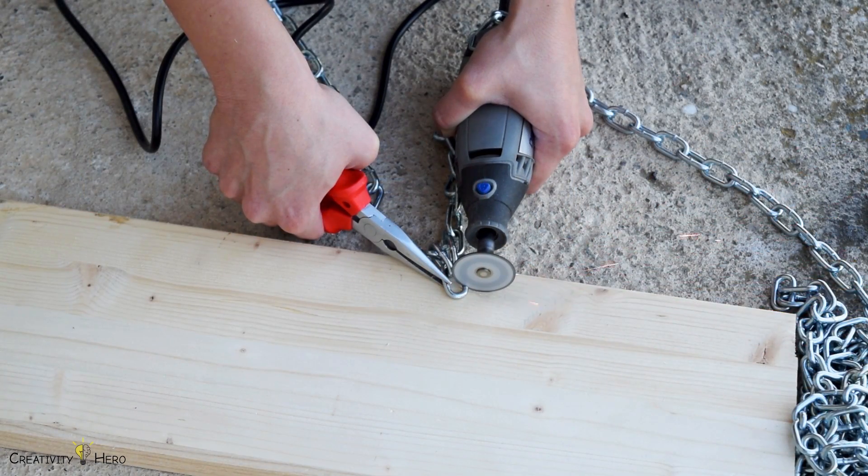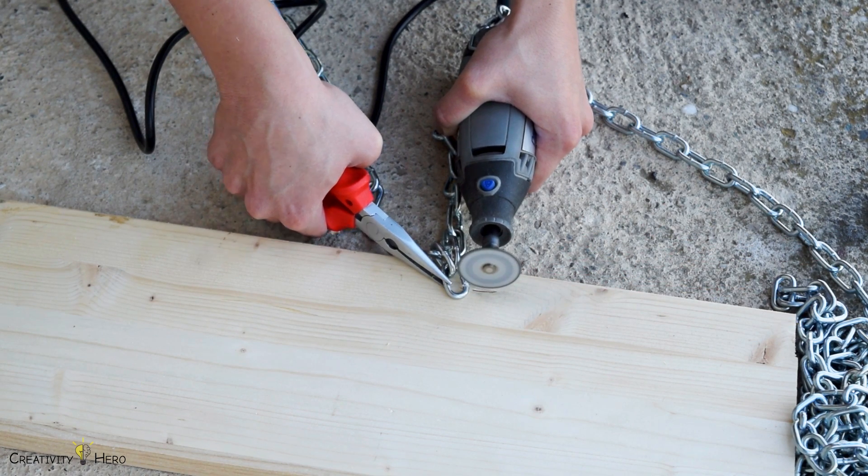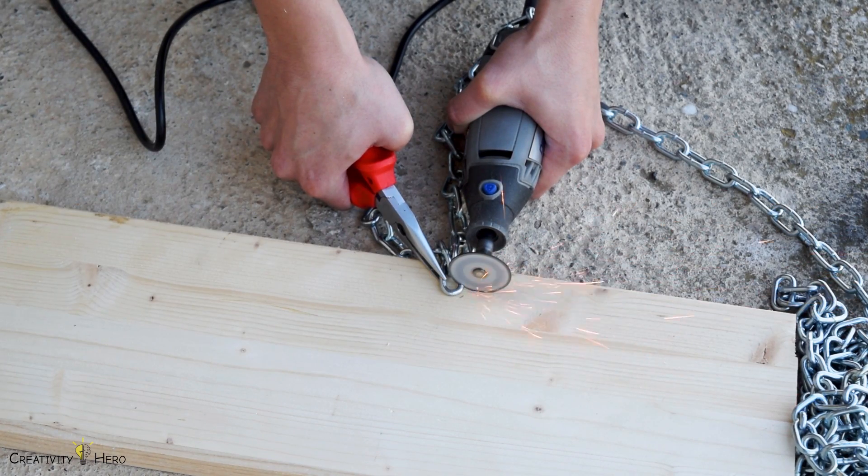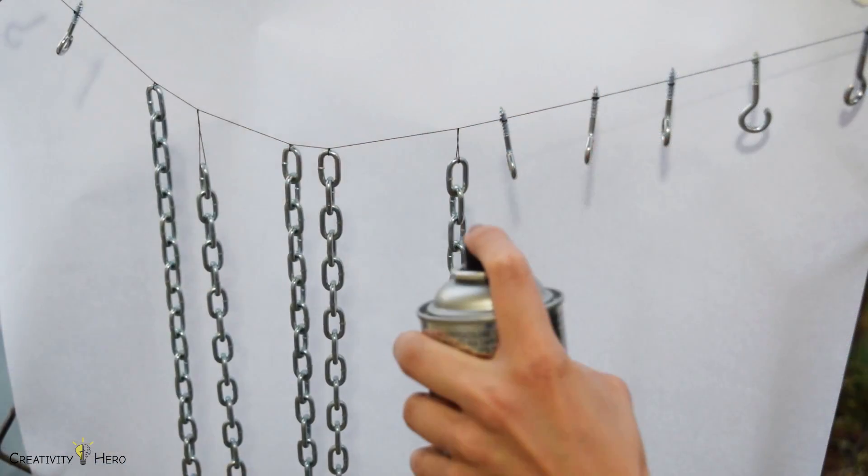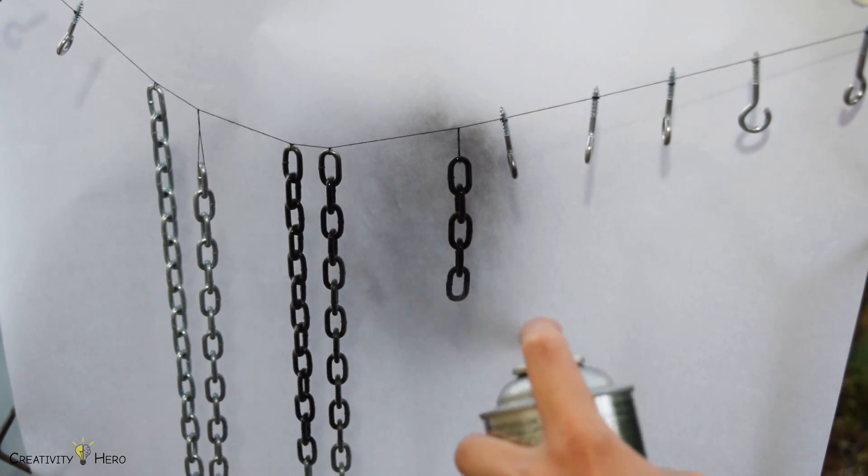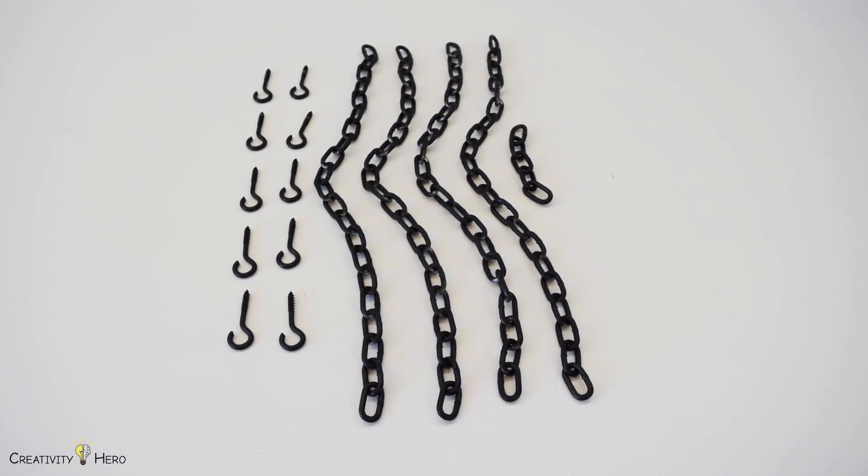Next I used a dremel tool to cut four equal lengths of chain. I cut these to 40 centimeters length. Also I cut one small piece 10 centimeters long. The chain and the hooks were silver but I wanted black ones so I painted them with black spray paint. I actually liked how they turned out.